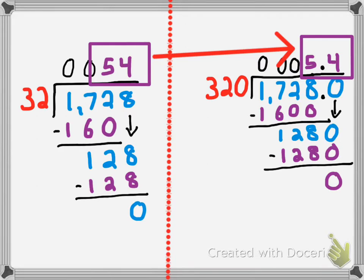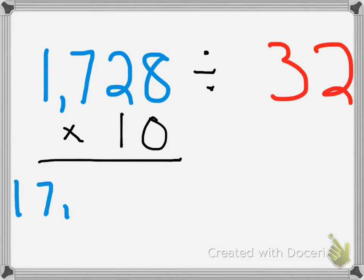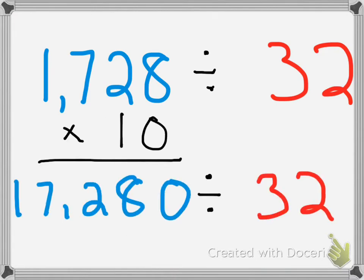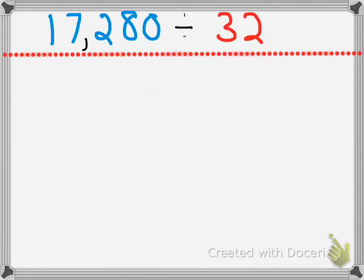Hmm, interesting. I wonder how we can generalize this pattern. Let's take the same problem and now multiply the dividend by the power of 10, making it 10 times bigger, and see — with our original divisor — what happens to our problem.